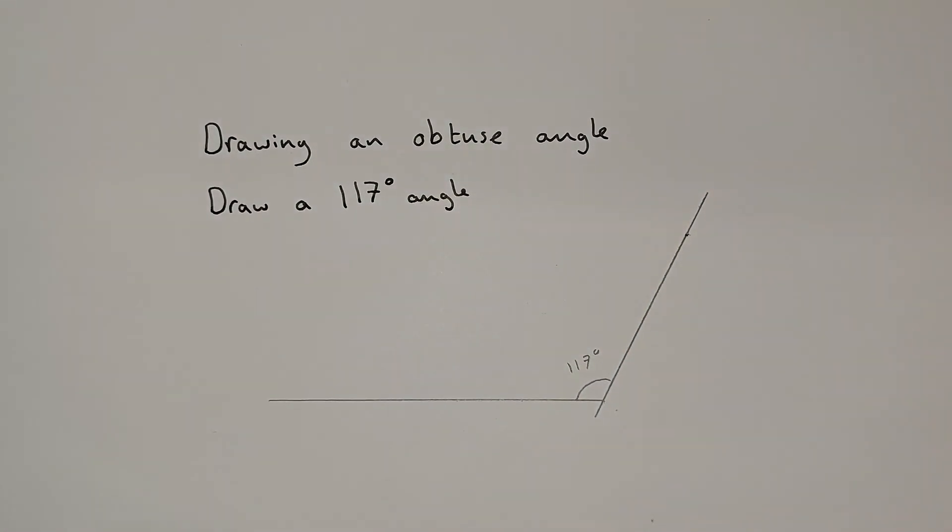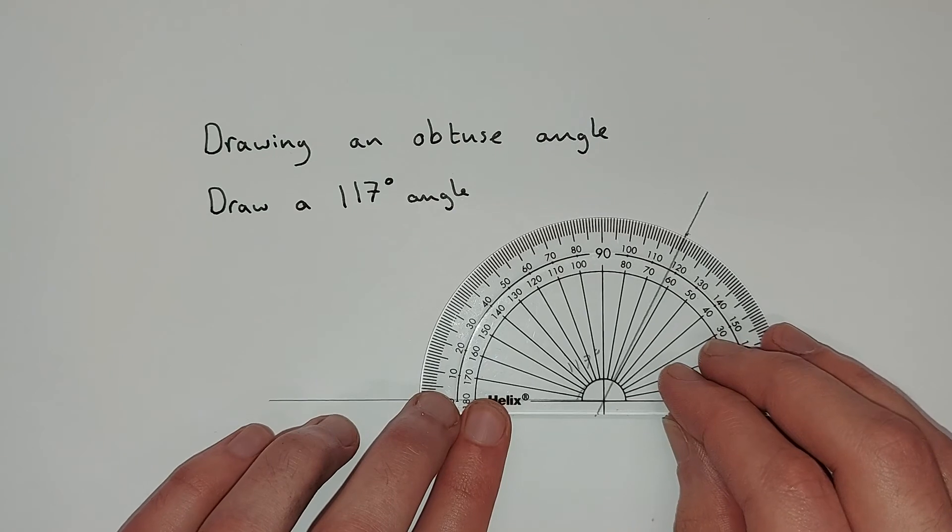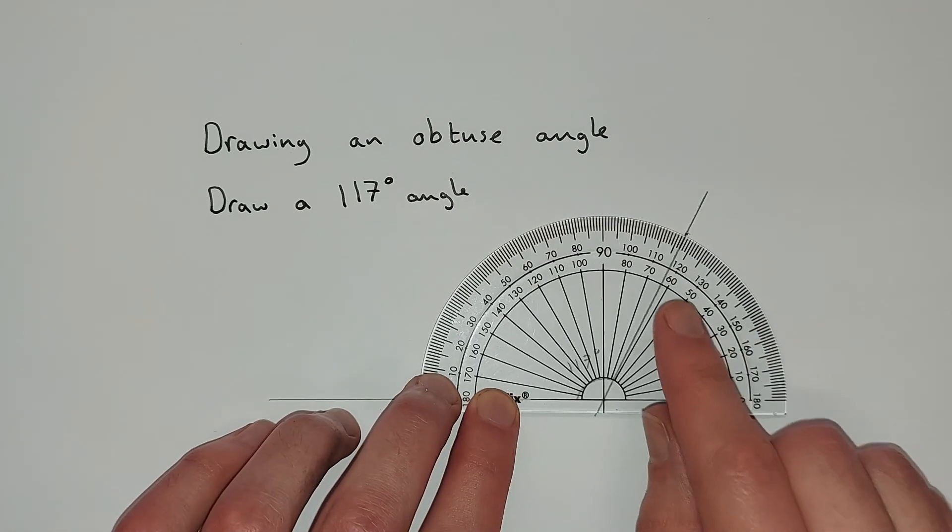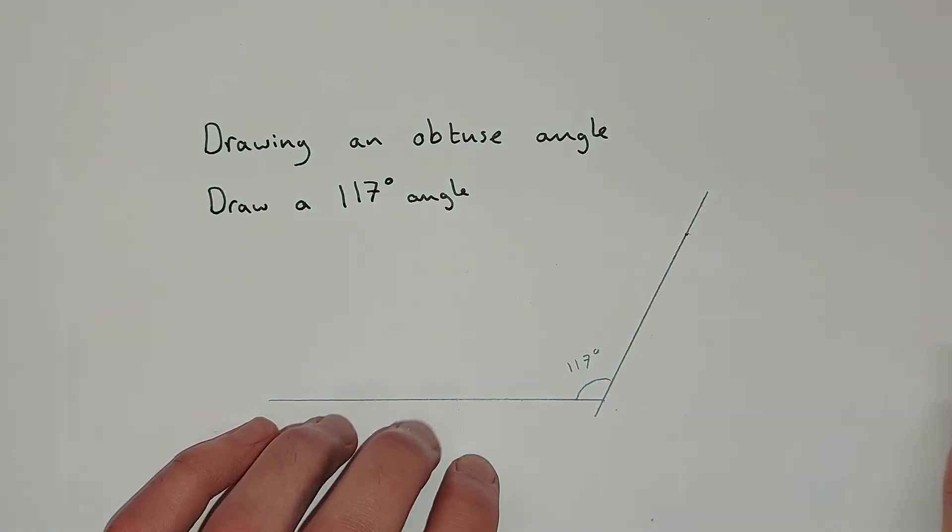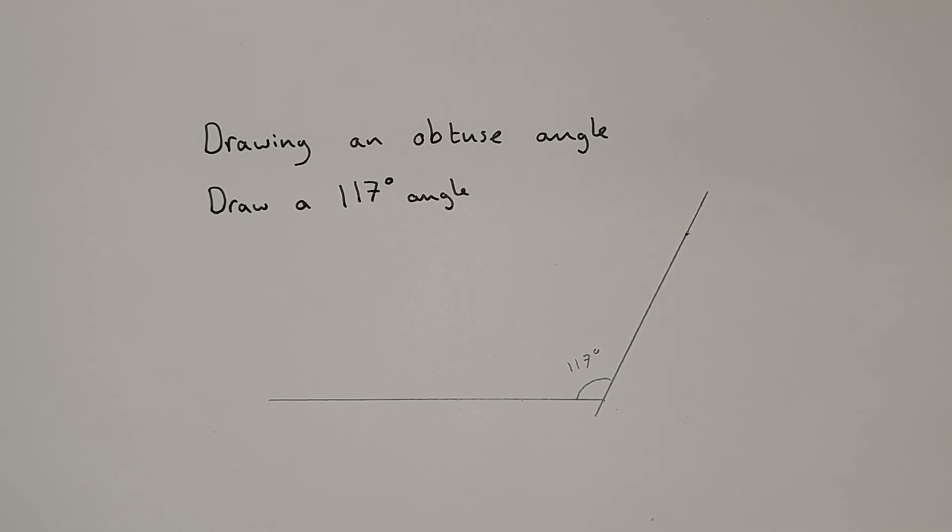So I've taken everything away, let's do a little measure to check how accurate I am. So 115, 16, 17, I'm happy with that. So again, make sure once you've measured it and you've drawn it, take everything away and then measure it again.